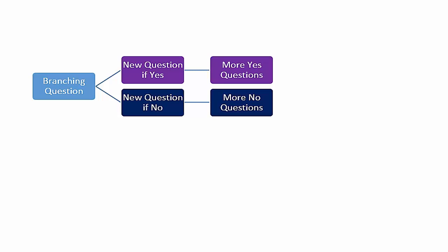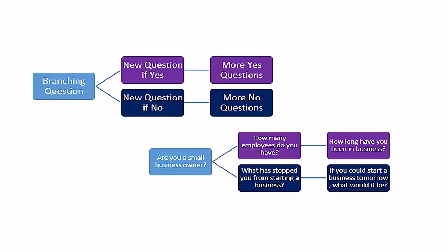For example, here I have a question: are you a small business owner? And if I apply branching logic to it, I can branch it out in two different ways. If they answer yes, that they are a small business owner, I can ask them how many employees they have, and then ask them how long have you been in business? But if they answer no, that they're not a small business owner, I can ask them what has stopped them from starting a business, or another question that would apply to a no answer of: are you a small business owner?